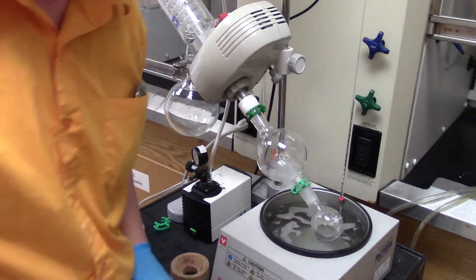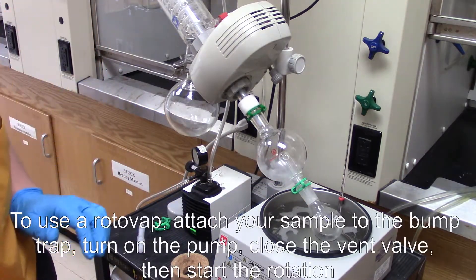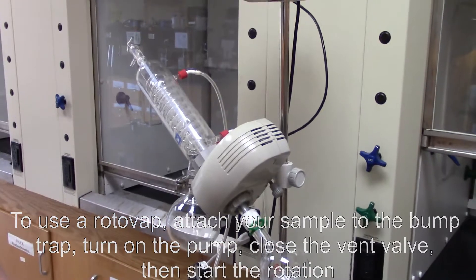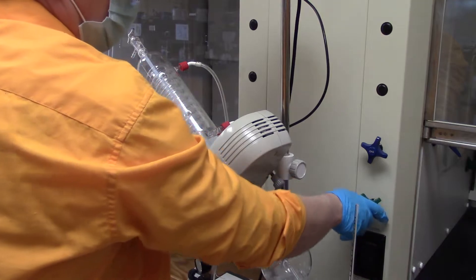So to use a rotovap, what you want to do, attach your sample to the bottom. One thing you never want to do is seal this valve first. So the first thing we're going to do, if it hasn't been done already, turn the cooling water on.